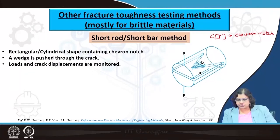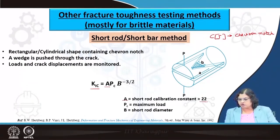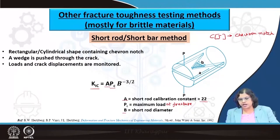In the short rod or bar method, either a cylindrical or rectangular specimen is used with a chevron notch that can be machined into brittle material. A wedge is pushed in so that fracture occurs, and the load and crack displacement are monitored. Fracture toughness is calculated using K1C = A × Pc / B^(3/2), where A is a calibration constant (approximately 22 for short rod configuration), Pc is the critical load at fracture, and B is the short rod diameter.